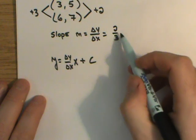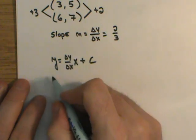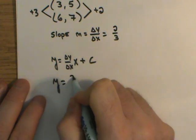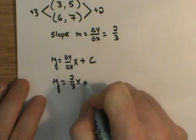And so when I look at this, I know what delta y over delta x is. It's just 2 thirds. y equals 2 thirds x plus c.